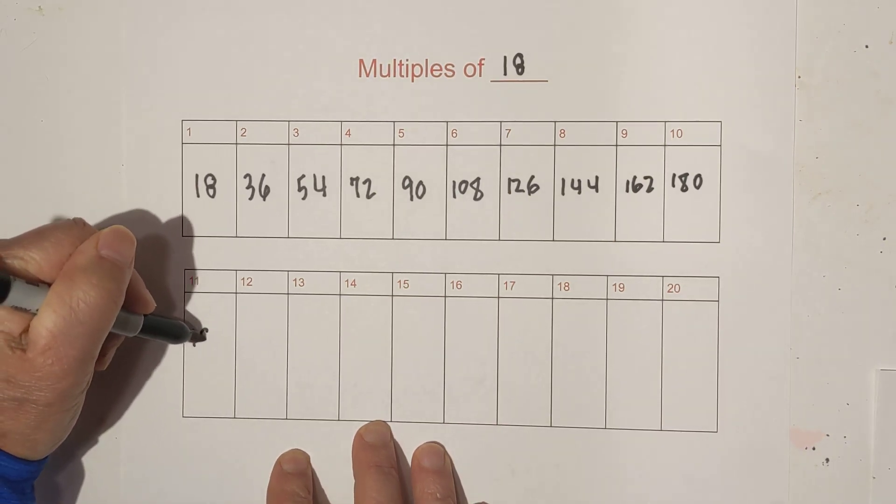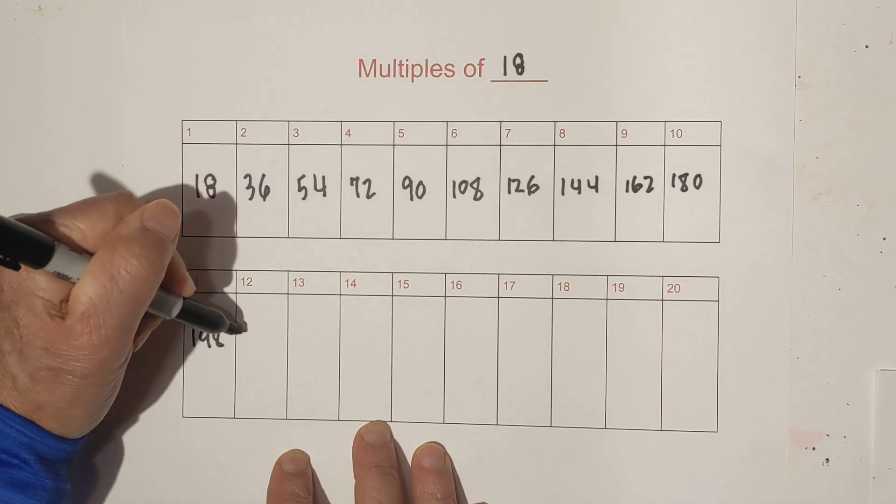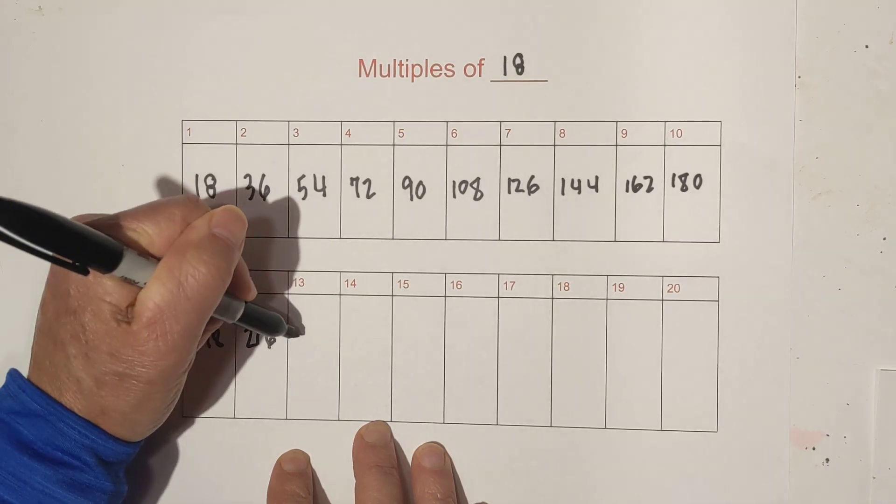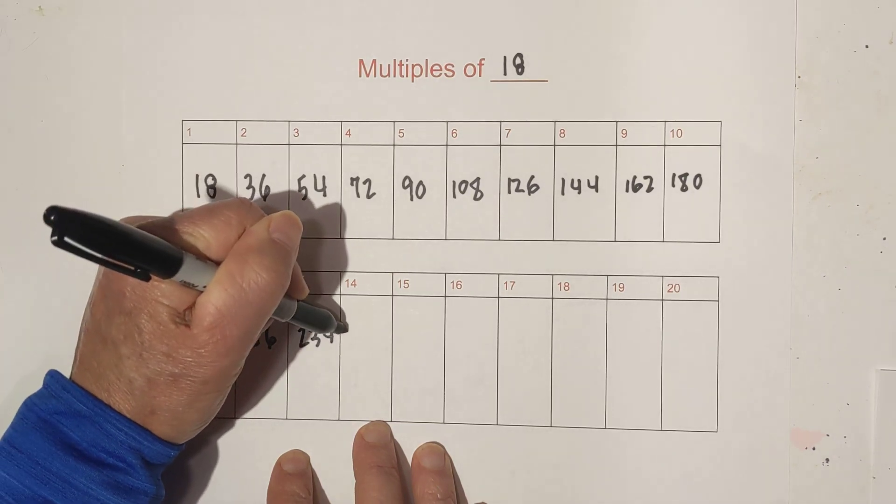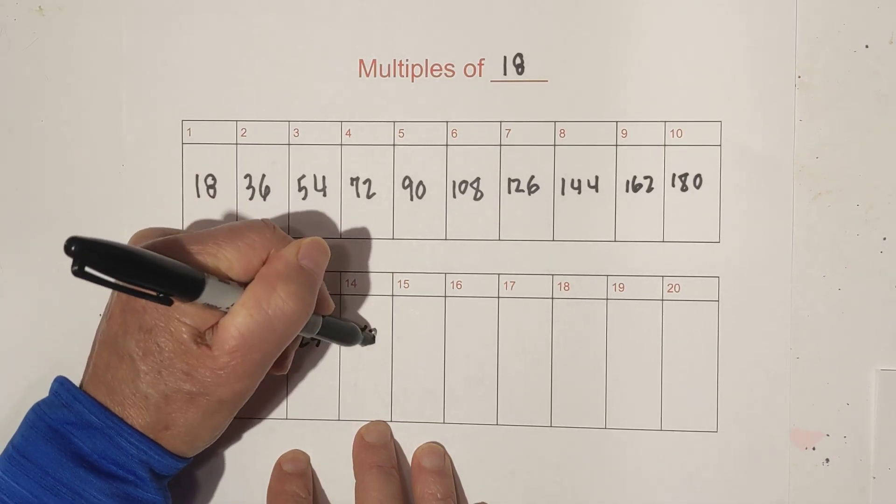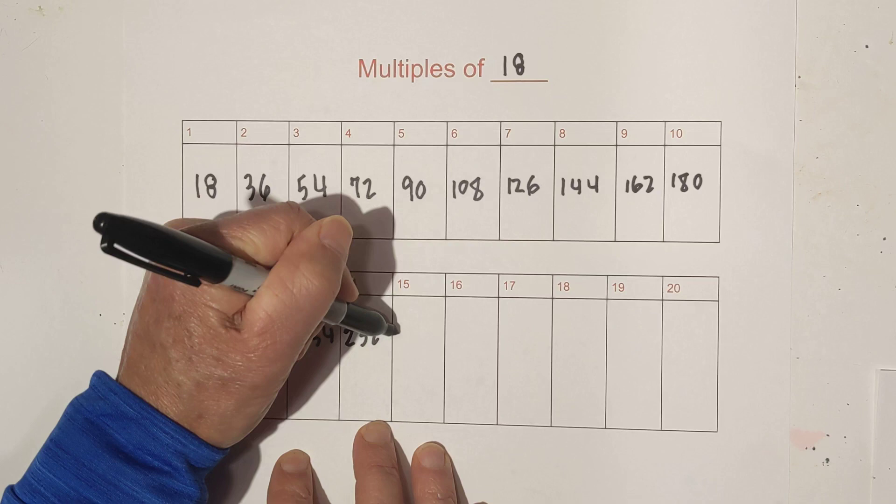Now we go 11 is 198. Then we have 216, 234, 252. Then we have 270.